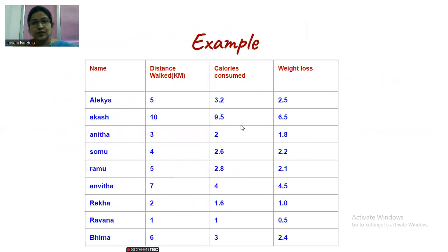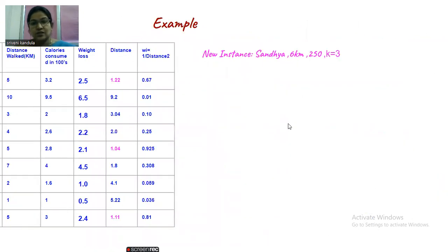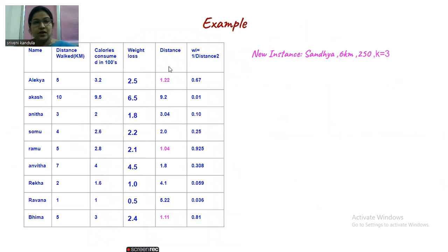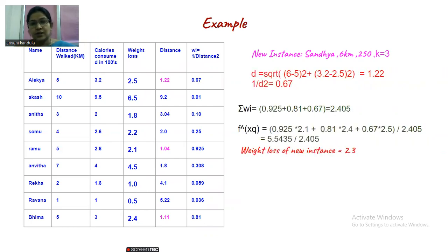So this is the example that we have taken. Here, just you can observe the change in this last column. This is our target. Only that is changed. Rest all are same. In the way for the weightless, I have assigned some numerical value instead of a label data. And for this again, I have calculated the distance and 1 by distance squared. If you observe, the values were the same. Only the change is here. All the process is similar to what we have done in the last.